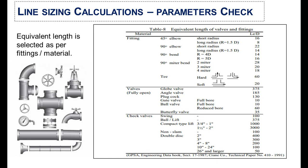Equivalent length is selected based on the fittings and materials used on the pipeline. For fittings, a 90-degree elbow with shorter radius has an equivalent length of 22. Similarly, if we add globe valves or any other type of valve, we select the equivalent length according to its type. In this table you can look up the equivalent length values according to the pipe fittings.